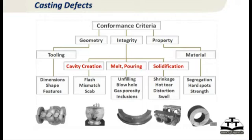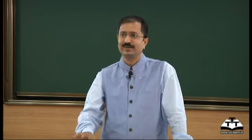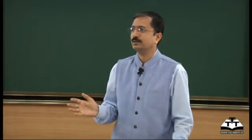Integrity is where the three major casting events matter. Casting is about just three steps: create a cavity, fill it properly, and let it solidify properly. Cavity creation defects include mismatch, flash, and scab from a badly made mold. Filling defects include cold shut, misrun, blowhole, and gas porosity from poor filling. Solidification defects include shrinkage, hot tear, distortion, and swelling from uncontrolled solidification. Then properties come from material and process parameters — things like segregation, hard spots, and strength — which people are increasingly demanding must be under control.